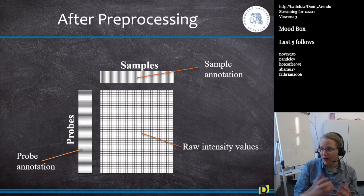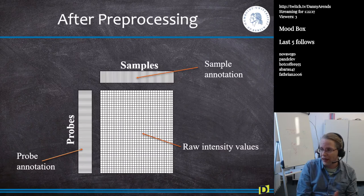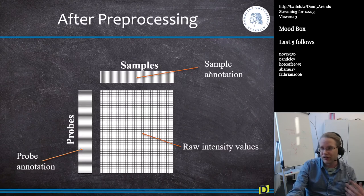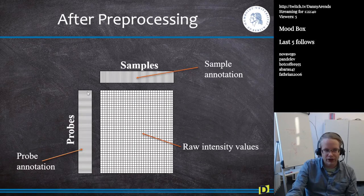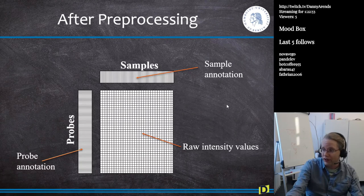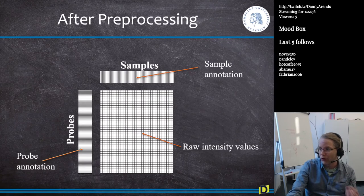After you've got your data back from the company and done your normalization to remove all background effects, what you generally end up with is a big matrix. On the columns you have the different samples and in the rows you have your probes. The samples have annotations saying which tissue they are and what treatment they received. This is a massive matrix generally containing 100,000 to 200,000 rows, and each cell contains the raw intensity value for that spot on the microarray.